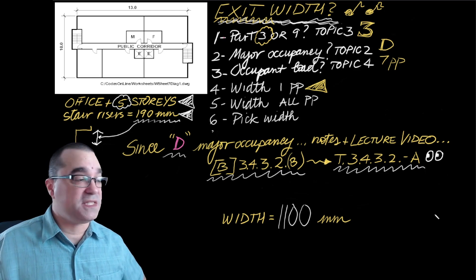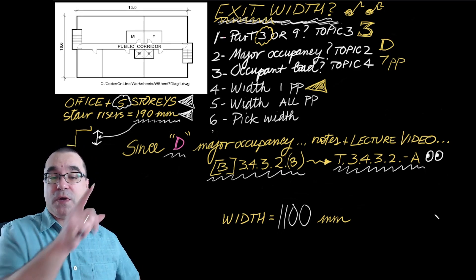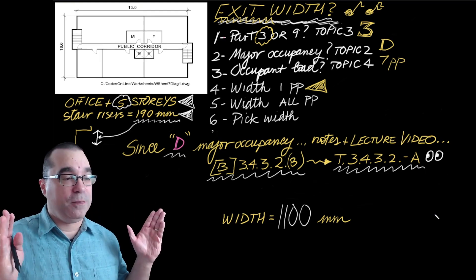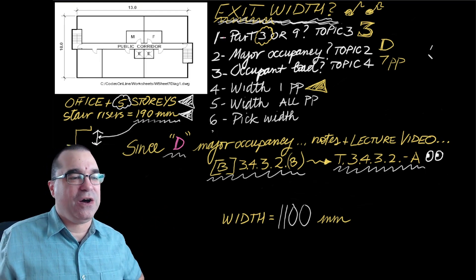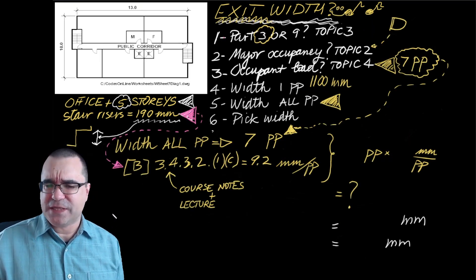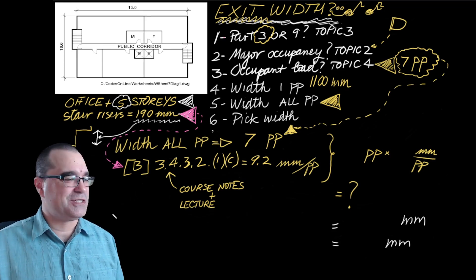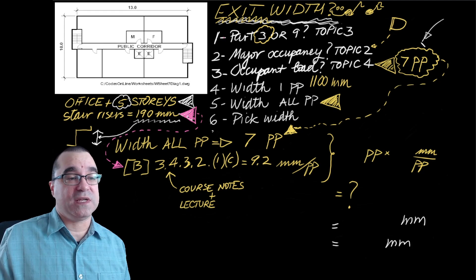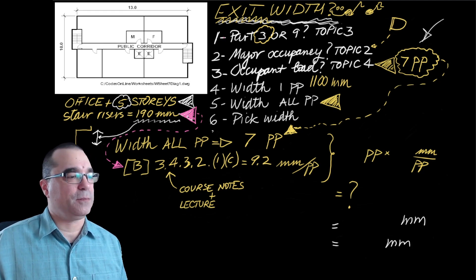We can now move on to step number five to figure out the width of each exit stairs to account for all people. That is the occupant load that we got under step three. So under step number five, I know it's a little busy, but follow along. You've got this. We're going to use the occupant load, the seven people that we got from step number three.